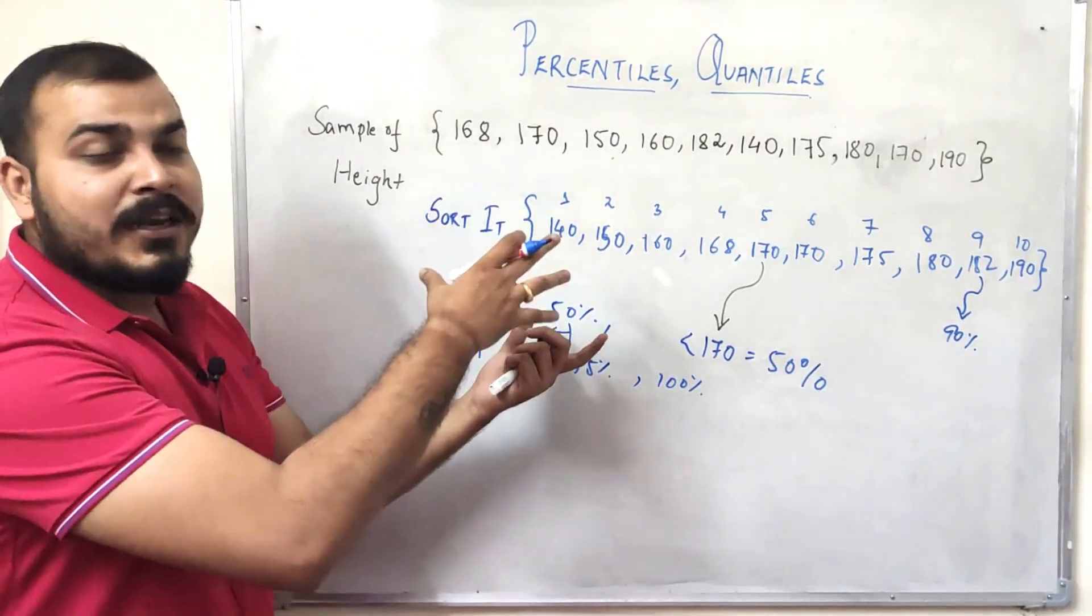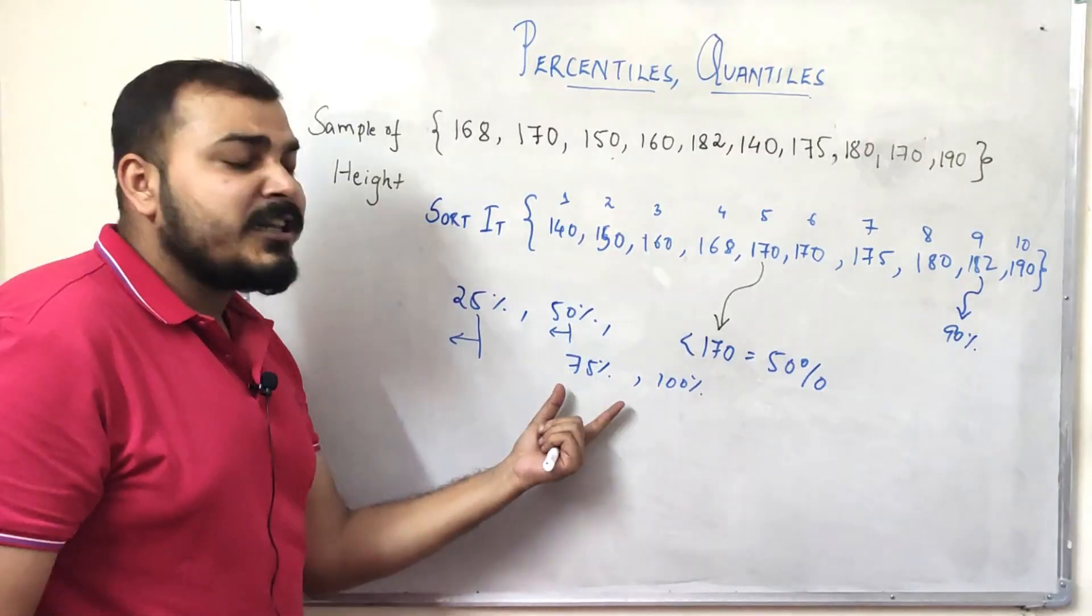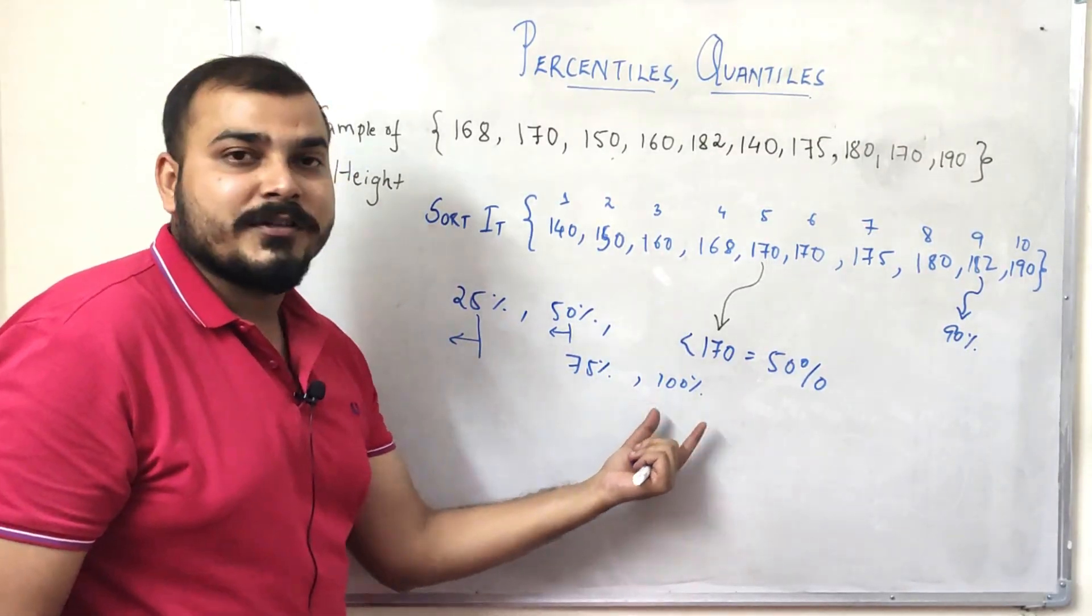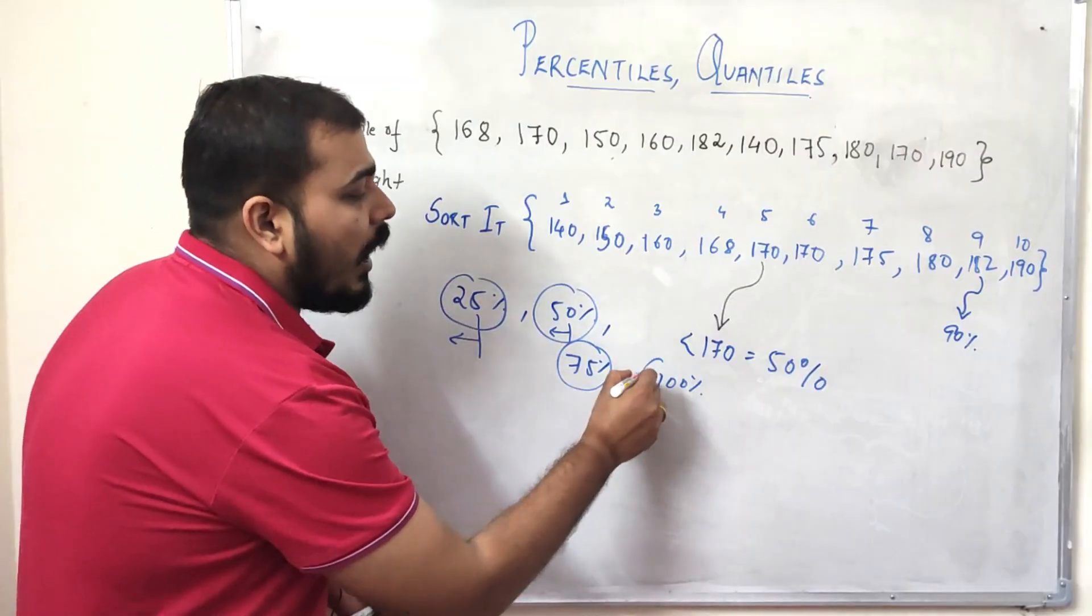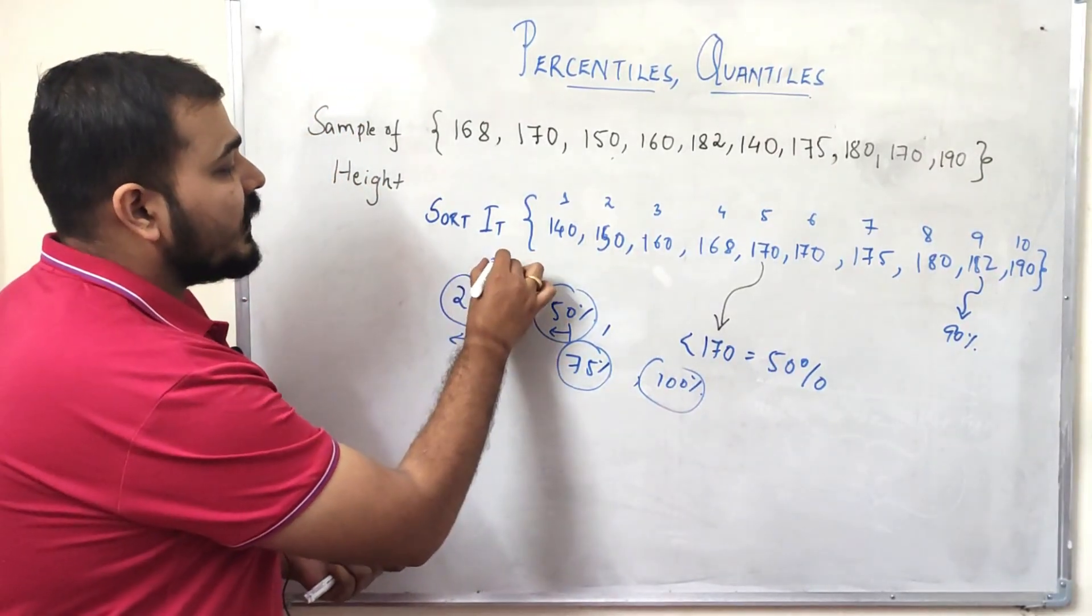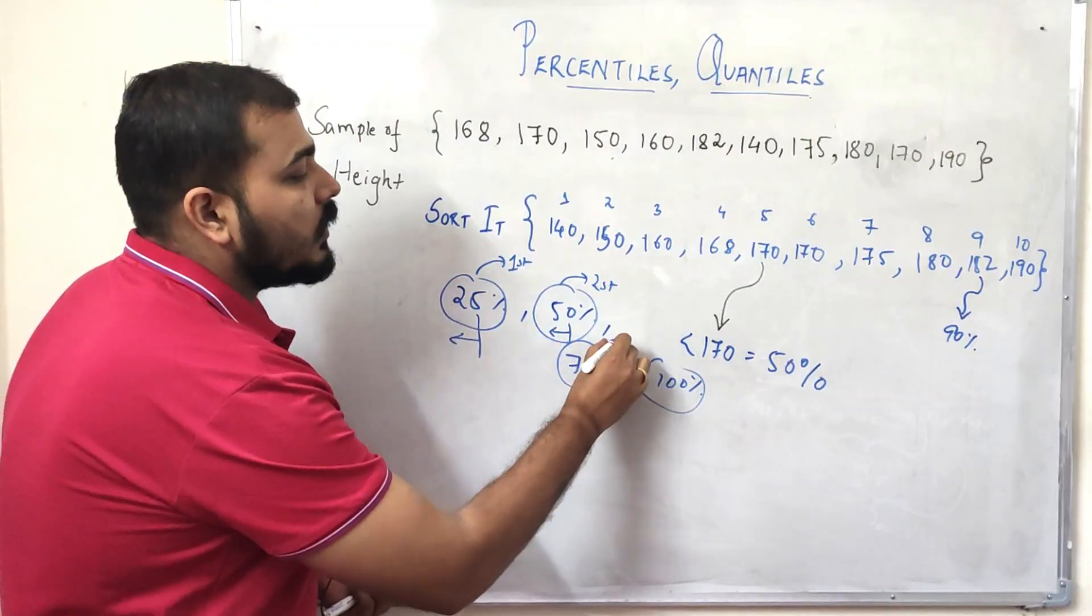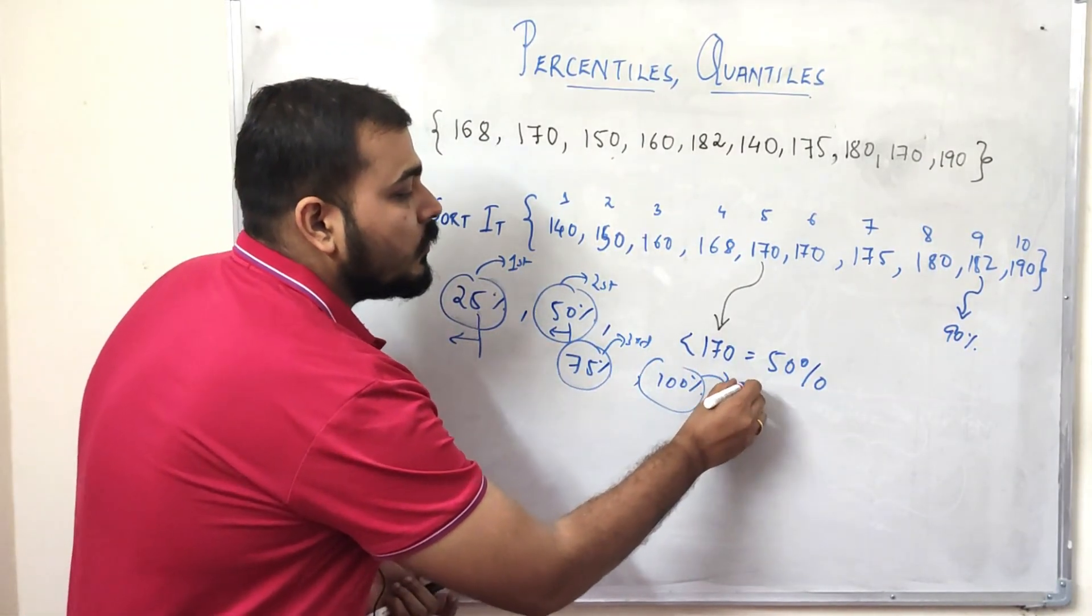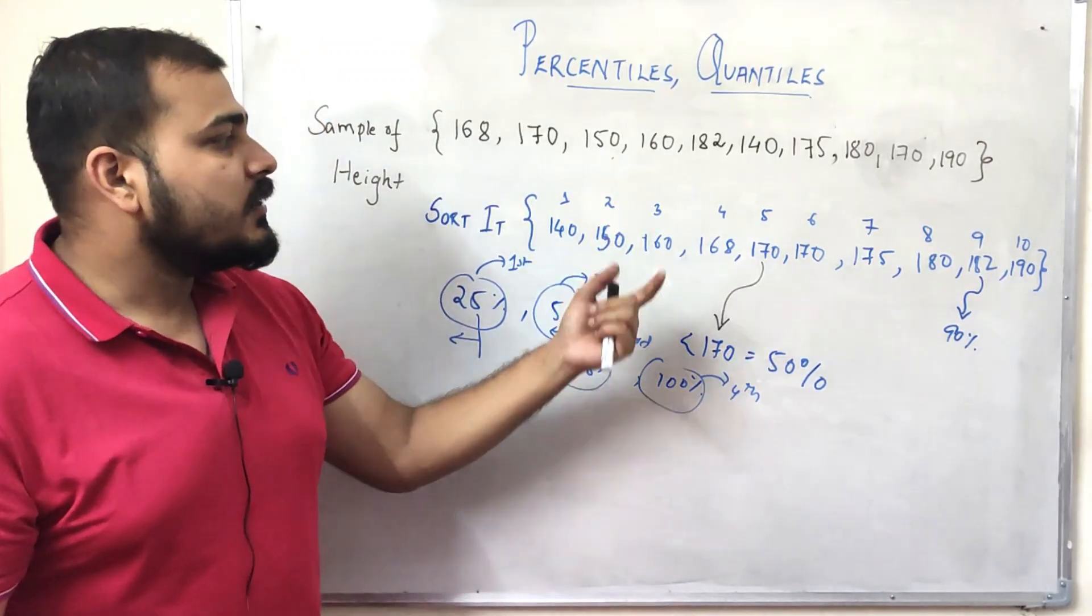Similarly in the case of 75 percentile and 100 percentile, these values are basically called as quantiles. How do you call this? This is basically called as your first quantile, second quantile, third quantile, and finally your fourth quantile. So if I want to mention the third quantile in this particular distribution, I have to basically refer to the 75th percentile.